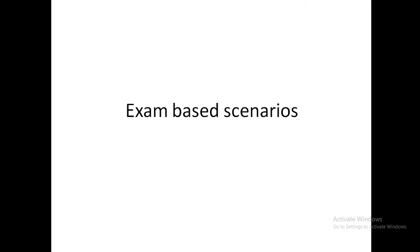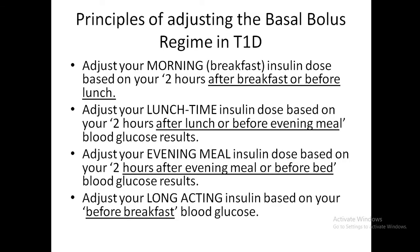The principles for adjusting insulin timing: adjust your breakfast insulin dose based on readings two hours after breakfast or before lunch. If readings are elevated or low before the evening meal or two hours post-lunch, adjust the lunch-time dose. If readings are high or low after the evening meal or before bed, adjust the evening meal dose. The long-acting basal insulin is adjusted based on the fasting blood glucose level before breakfast.